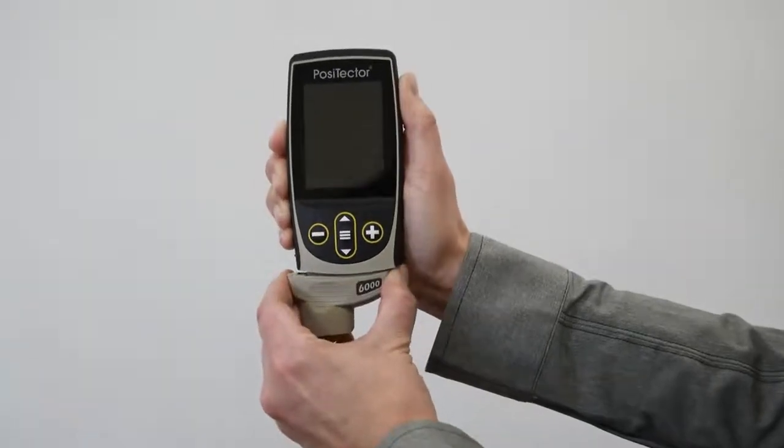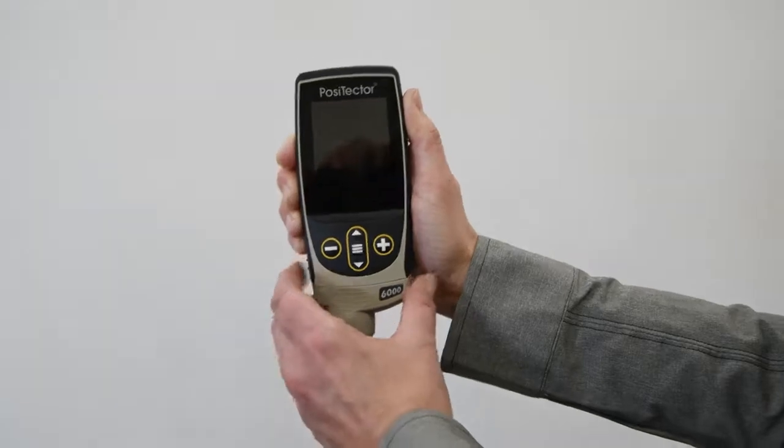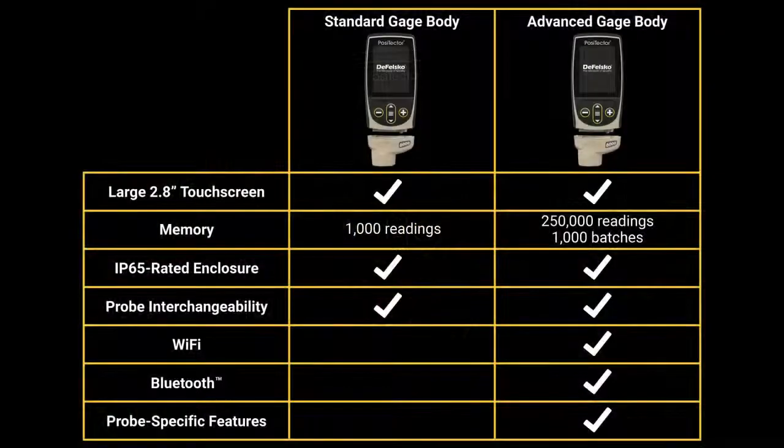PosiTector inspection instruments are comprised of two components: a gauge body and probe. The PosiTector gauge body is available in either standard or advanced models. Visit defelsco.com/PosiTector to learn more or watch the PosiTector video linked below.